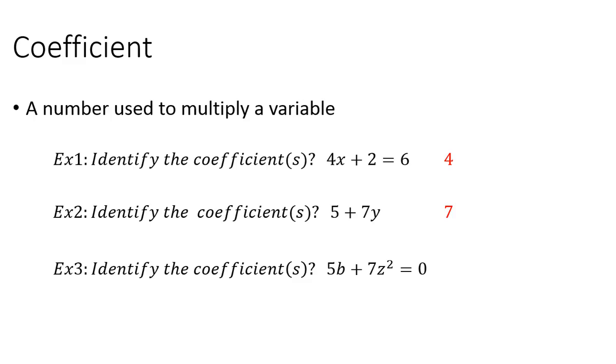Identify the coefficient in example 3 or coefficients. The coefficients would be 5 and 7 because 5 is being multiplied by b and 7 is being multiplied by z squared.